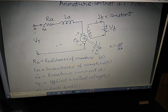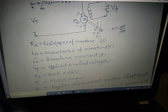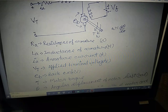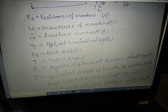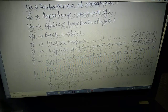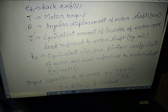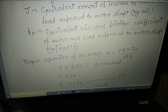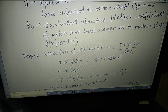Some notations: RA is armature resistance in ohms, LA is inductance of the armature in Henry, IA is armature current in amperes, VT is terminal voltage in volts, EB is back EMF in volts, T is motor torque in Newton-meter, theta is angular displacement of motor shaft in radians, J is the equivalent moment of inertia in kg·m², and F0 is the equivalent viscous friction coefficient of motor and load referred to motor shaft in Newton-meter per radian per second.